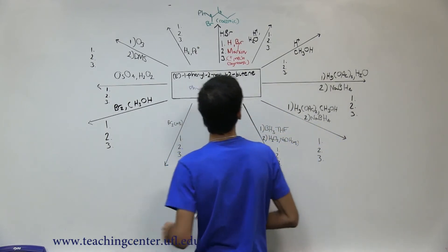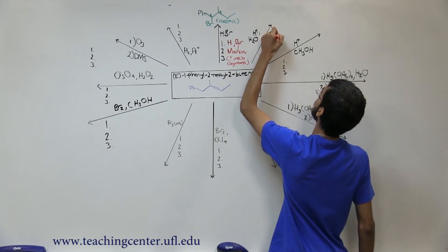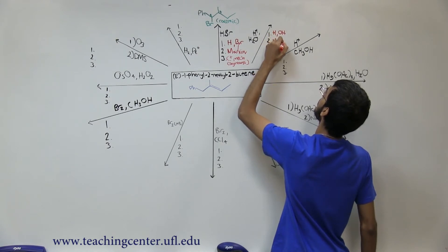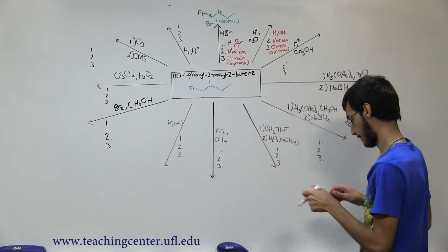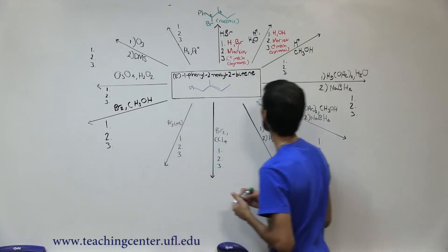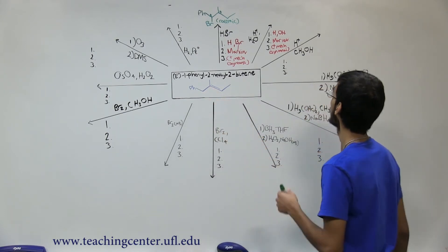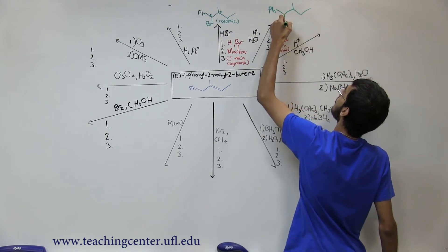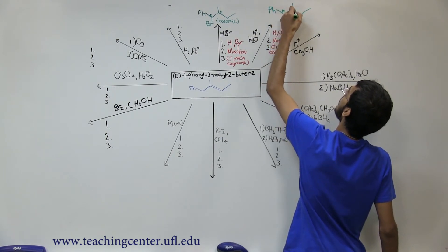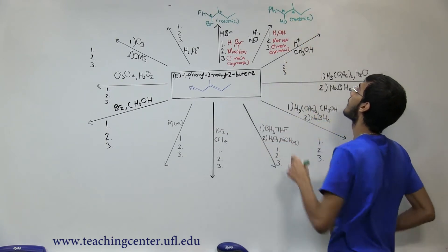The next reaction is H+ and H2O — acid-catalyzed hydration conditions. The 1-2-3s: H and OH, Markovnikov addition, and C+ mechanism giving syn plus anti. For this molecule, the carbocation forms first at the tertiary position and then rearranges to the benzylic position, so this is where the OH ends up. We form two chiral centers, so again we get a racemic mixture.